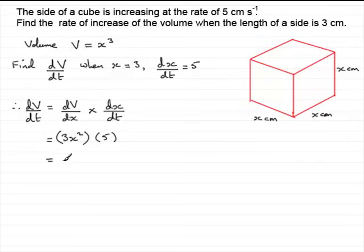And if we clean this up, what we've got is 15x squared. And this is the general rate of change of volume with time in terms of the length x.